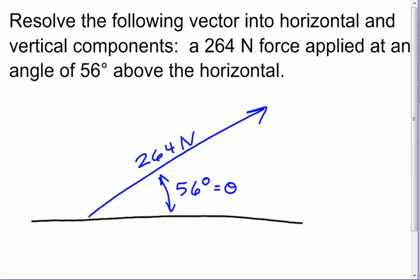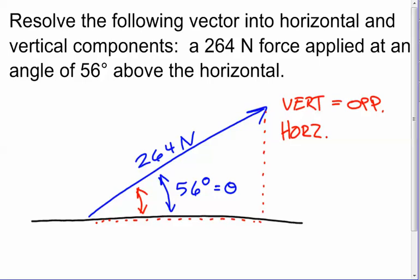The vertical component is here and the horizontal component is here. If our angle is here, then the vertical component is equal to the side opposite, and the horizontal component is equal to the side that is adjacent.